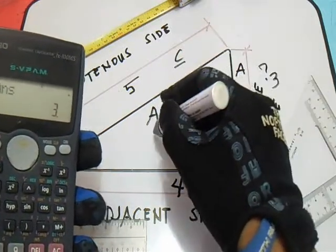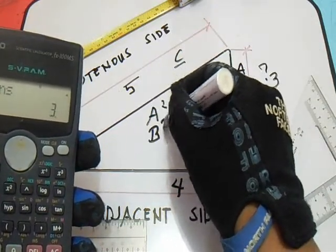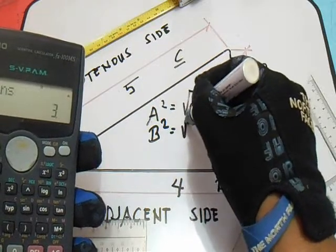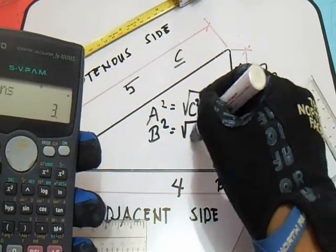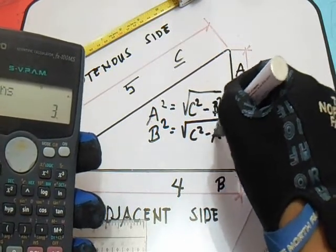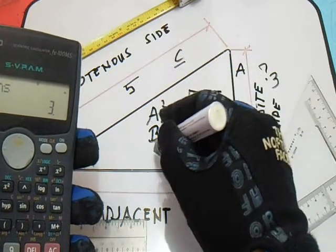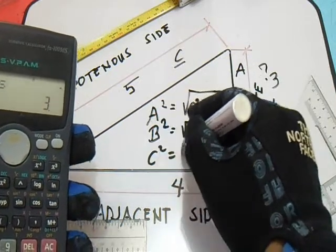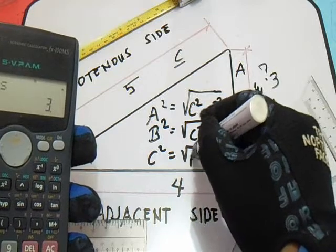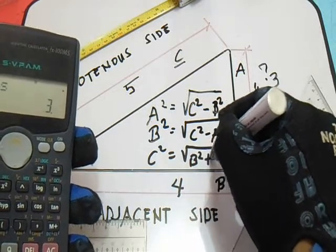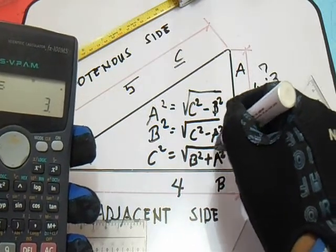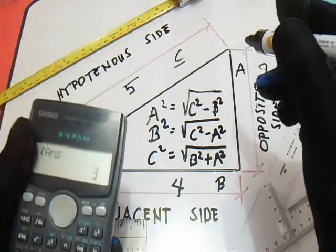And then B squared is square root of C squared minus A squared. And then C squared is B squared plus A squared. So that's all our formulas.